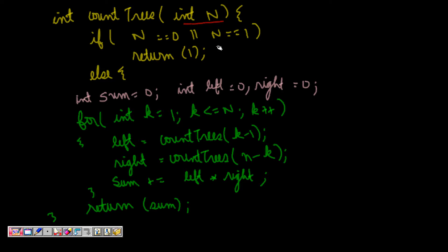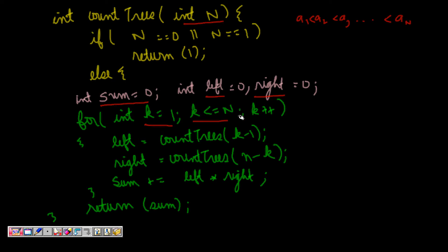Here is the function countTrees(n). If n is 0 or 1, it's a base case and we return 1. Otherwise, initialize sum=0, left=0, right=0. Then for k=1 to n, compute left = countTrees(k−1), right = countTrees(n−k), and sum += left × right. Return sum. This gives the count of all distinct binary search trees for n unique elements. This is a combinatorial problem of counting how many trees are possible.